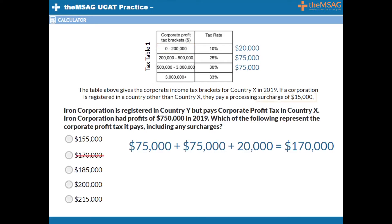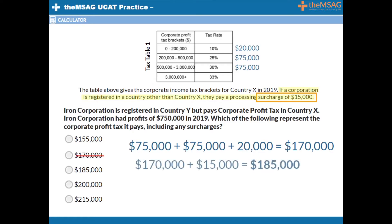Don't forget the surcharge. The writing beneath the table indicates that if a corporation is not registered in 100X, they must pay a processing surcharge of $15,000. Don't get an answer wrong for so small a detail. Always remember to check any additional information around the table or graph. $170,000 plus $15,000 gives us our correct answer of $185,000 owed — answer choice C.